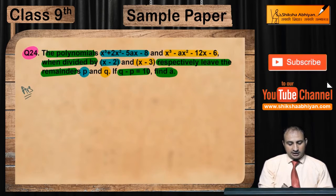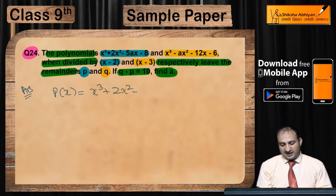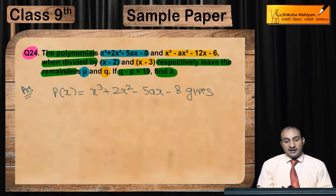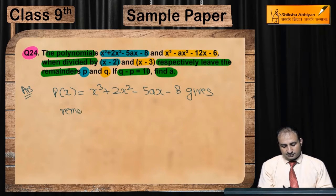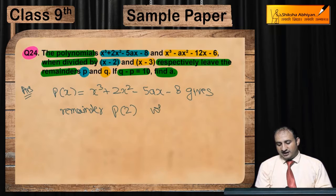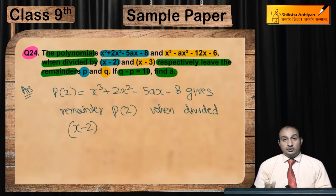First, let me represent the first polynomial as p(x): x³ + 2x² - 5ax - 8. This gives remainder p(2) when divided by x - 2.